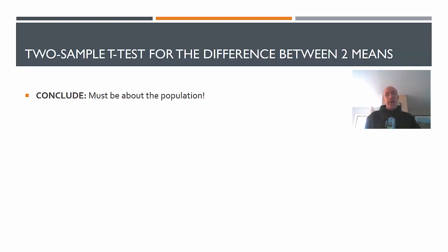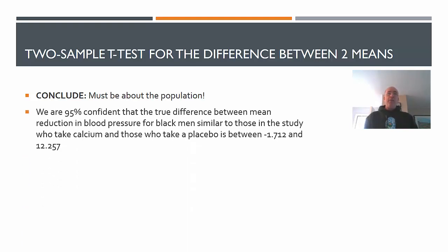Here's our conclusion. And it must be about the population here. This is a little bit tough to word. Keep in mind that we're trying to compare the difference between the two treatments. We are 95% confident that the true difference between mean reduction in blood pressure for black men, similar to those in the study who take calcium versus those who take placebo, is between negative 1.7 and as high as 12.257. So that would be a good conclusion. The difference between the two population means.